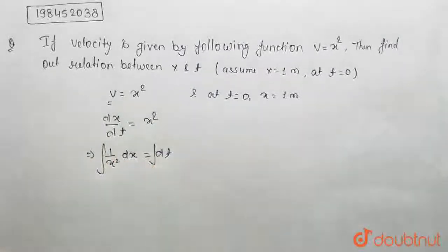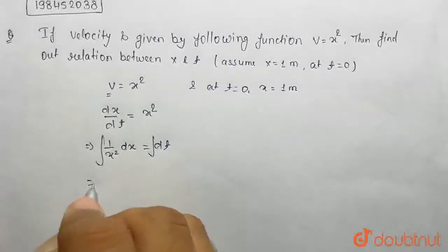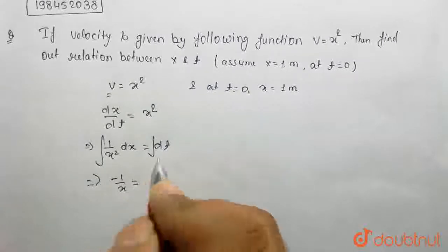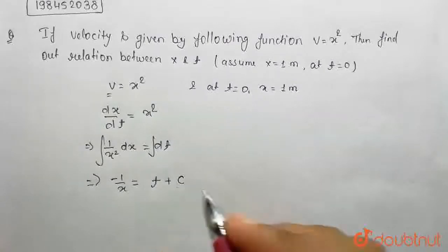Integrate both sides. Indefinite integral. So, 1 by x squared integration will be minus 1 by x is equal to t plus integration constant c.